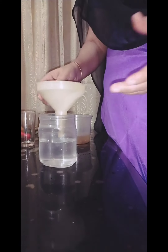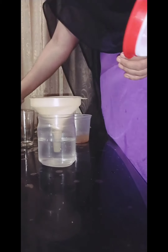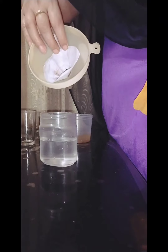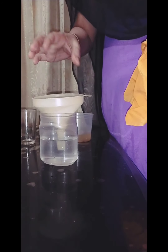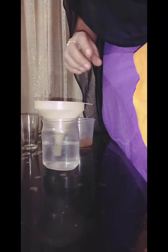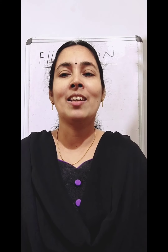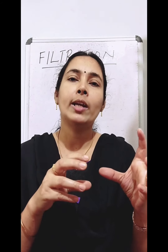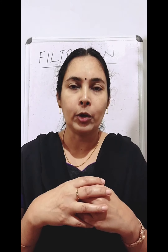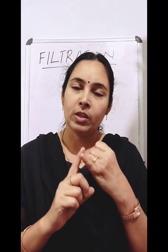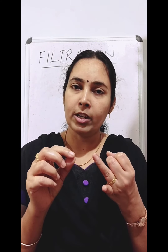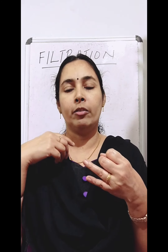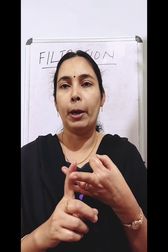For filtration, we can use a strainer, or a piece of cloth, or a filter paper. The solid particles remain at the top of the strainer, piece of cloth, or filter paper. What is filtration? It is the method of separating an insoluble component from a mixture of solid and liquid. For very small particles, we use a piece of cloth; and if particles are even smaller, we use a filter paper.